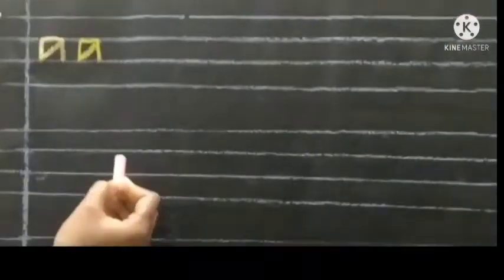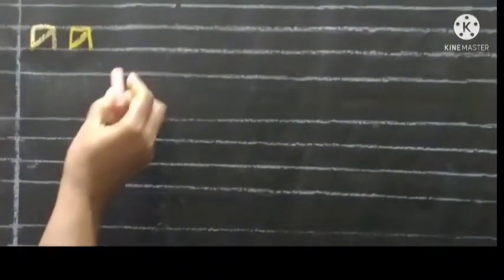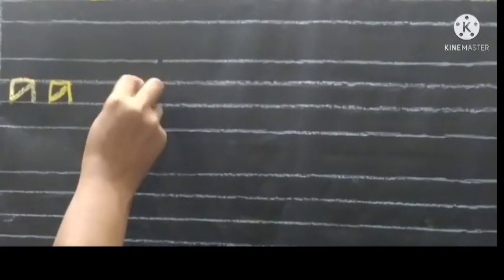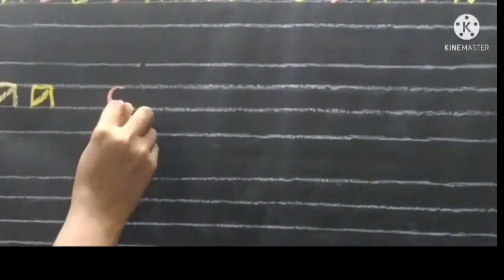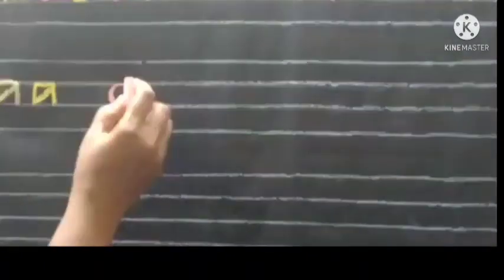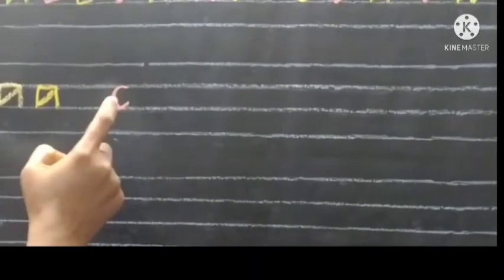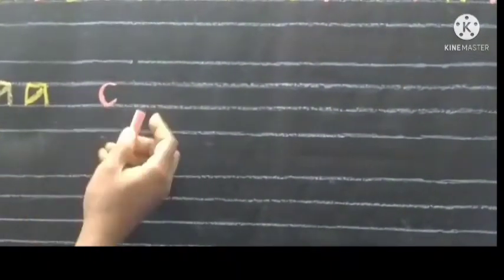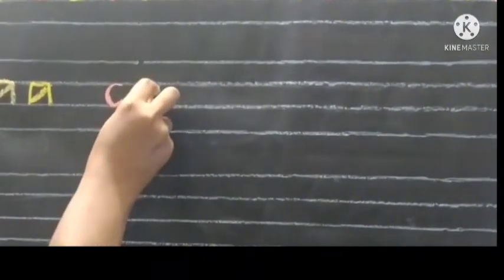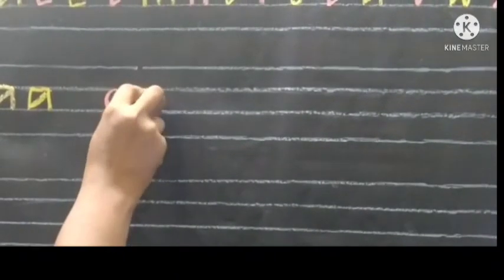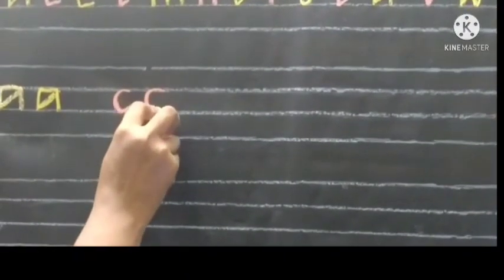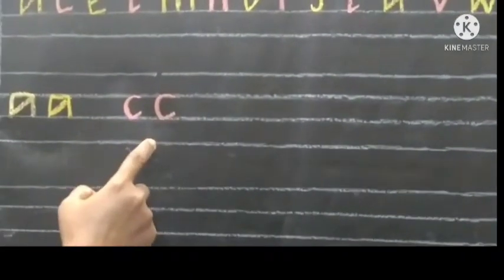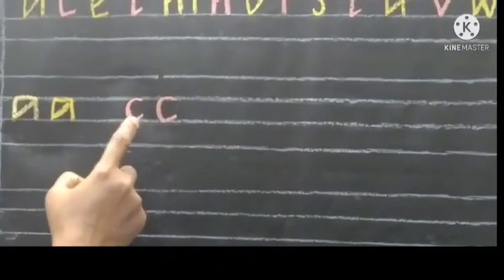Now we are going to write C. Just draw a curve like this. This is called C. Write once again: just draw a curve like this. C.